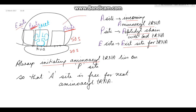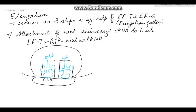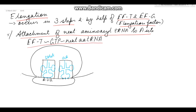The next step is elongation, which occurs in three steps with the help of elongation factors: elongation factor T and elongation factor G. The first step is attachment of the next amino acid-tRNA to the A site. It first forms a complex with elongation factor T and GTP, and with GTP dissociation, the amino acid-tRNA binds to the next codon on the messenger RNA.